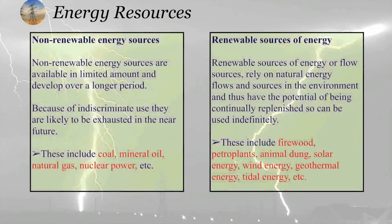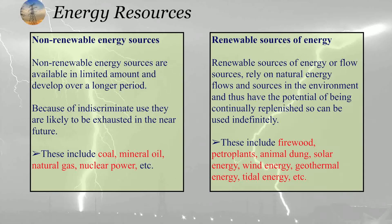Energy is divided into two parts: renewable energy sources and non-renewable energy sources. Non-renewable energy sources are available in limited amounts and develop over a long period of time, so due to indiscriminate use they are likely to be exhausted in the near future — for example, coal, mineral oil, natural gas, and nuclear power. Renewable energy sources are flow sources; they rely on natural energy flows in the environment and have the potential to be continuously replenished, so they can be used indefinitely.